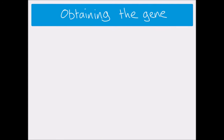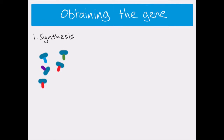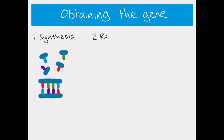Now let's look in detail at the ways we could obtain the gene in the first place. The first method is synthesis. In this case we don't need any DNA template — we just need to know the sequence of nucleotides for the gene we're interested in. With a free supply of nucleotides it's possible in the laboratory to assemble those nucleotides in the correct sequence to produce our gene of interest.